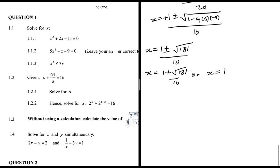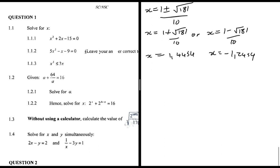So x = (1 + √181)/10 or x = (1 - √181)/10. Running that through the calculator gives x ≈ 1.4454 or x ≈ -1.2454. Now we move to 1.1.3: x² ≤ 3x.